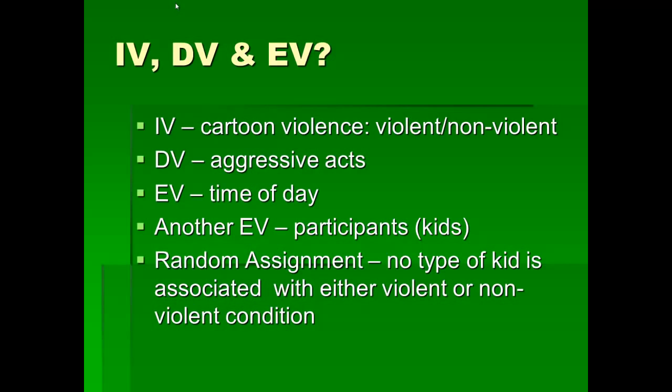You could say, and you would be correct, that another extraneous variable is the participants — that is, the students. However, since we randomly assign the students to conditions, no special type of kid is associated with either the violent or nonviolent condition. Since there are no systematic differences between the kids in one condition versus another, we can say that we've controlled that.